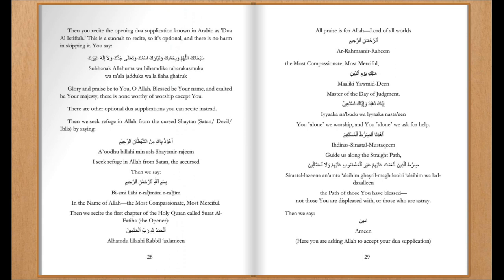Then you recite the opening dua supplication known in Arabic as du'a al-istiftah. This is a sunnah to recite, so it's optional and there is no harm in skipping it. You say: 'Glory and praise be to you, O Allah. Blessed be your name and exalted be your majesty. There is none worthy of worship except you.' There are other optional dua supplications you can recite instead. Then we seek refuge in Allah from the cursed Shaitan, and then we recite the first chapter of the Holy Quran called Surah Al-Fatiha, the opener.